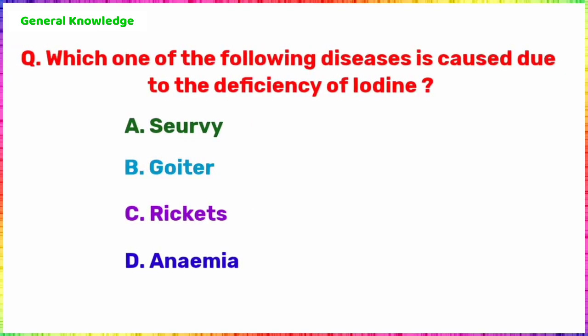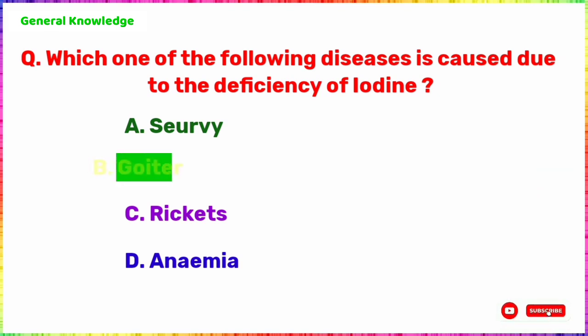Which one of the following diseases is caused due to the deficiency of iodine? The correct answer is Option B, Goiter.